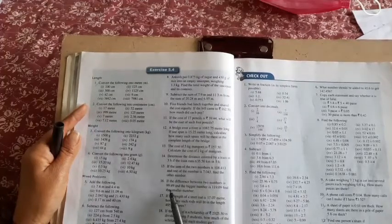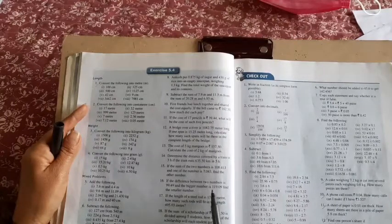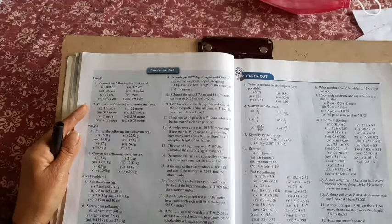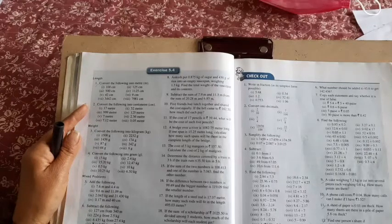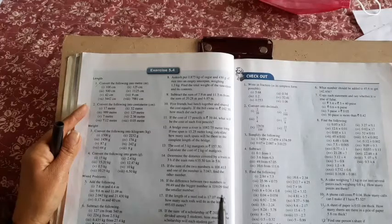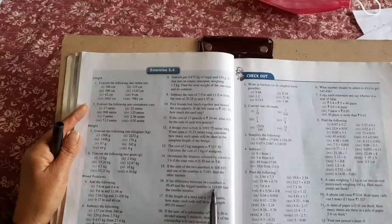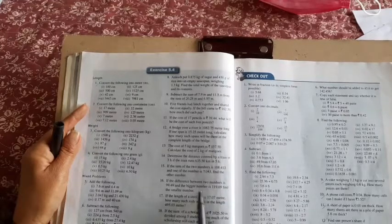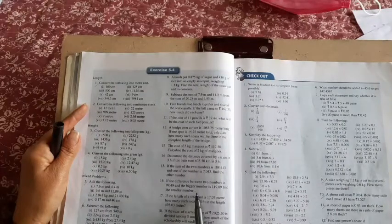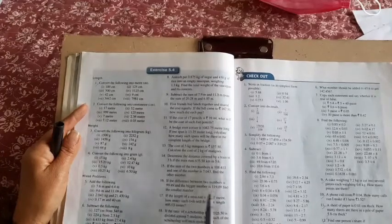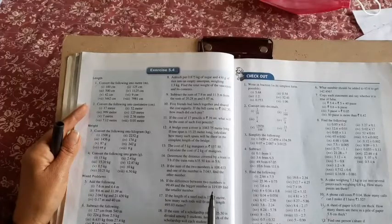Question 16: The difference between two numbers is 99.49. If the bigger number is 119.09, find the smaller number. The difference between two numbers means you subtract one from another. Subtract from the bigger number to get the smaller one.